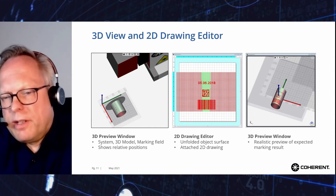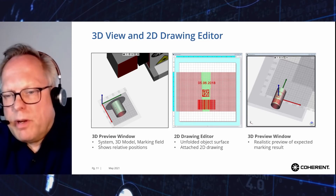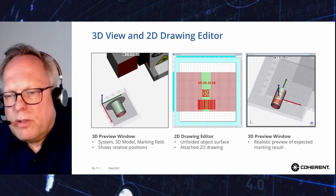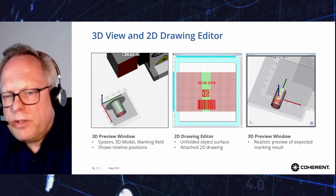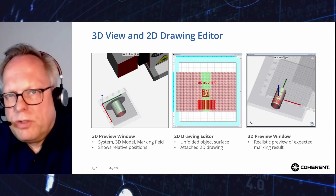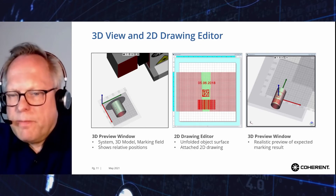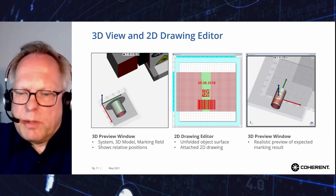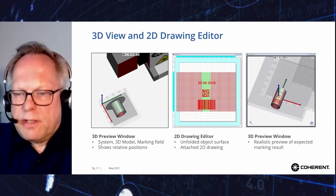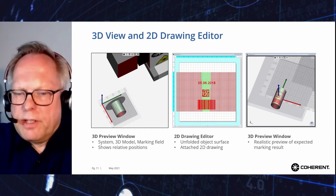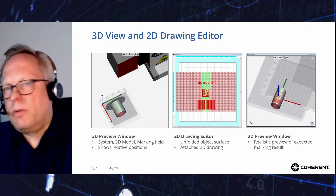These geometries are easy to define with a few parameters. In this example, barcodes are marked onto a cylinder. The surface of the cylinder is flattened onto a plane and shown in the 2D drawing editor. In this editor, the marking content can simply be superimposed onto the cylinder's surface. The preview editor gives a realistic representation of how the real mark will look.